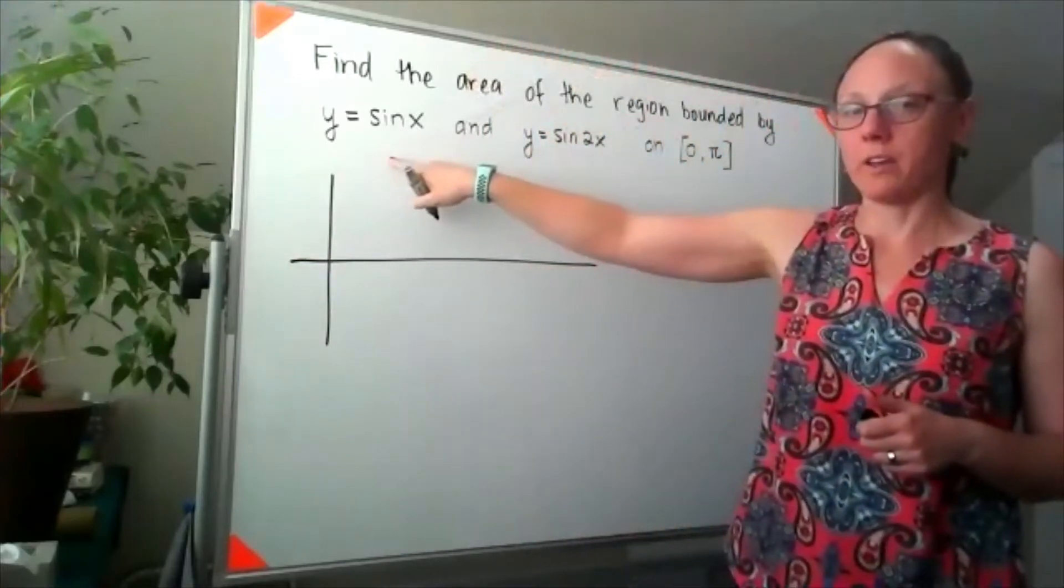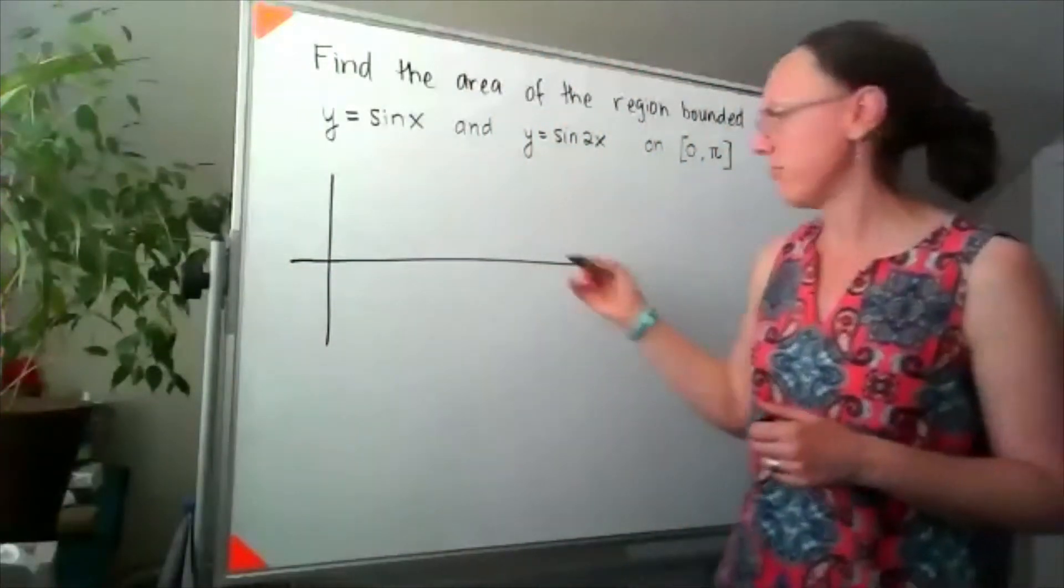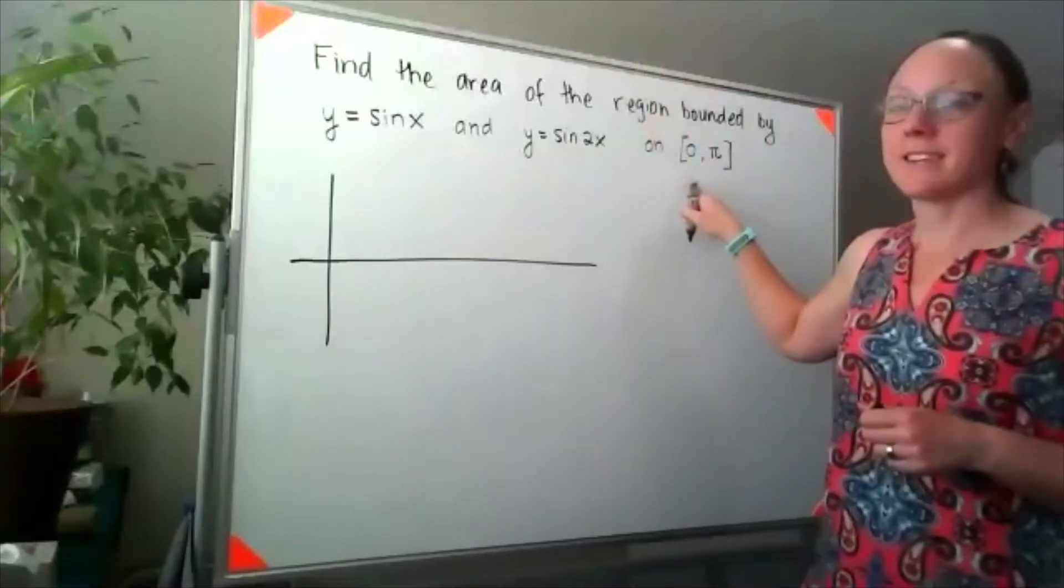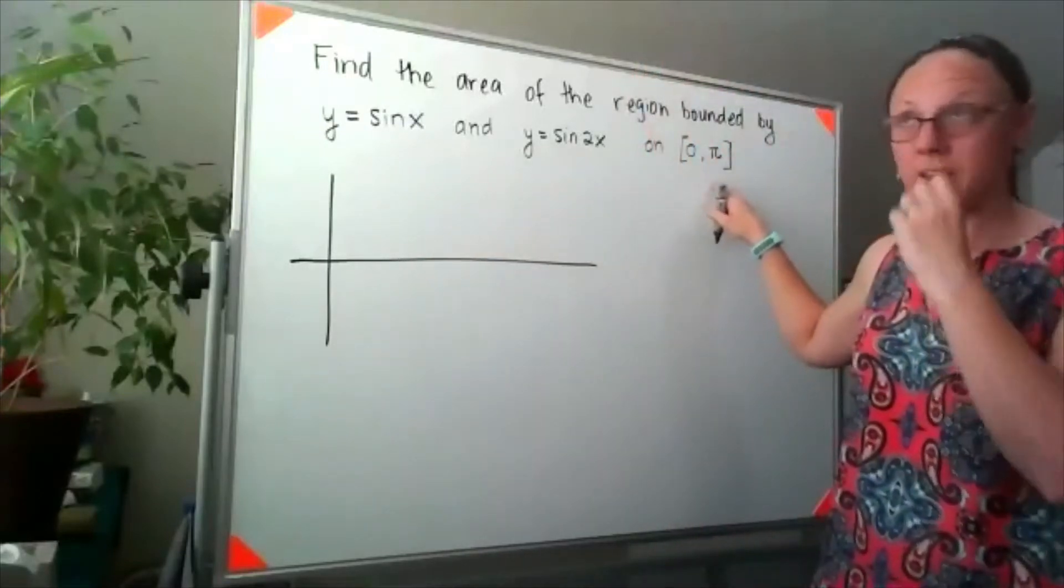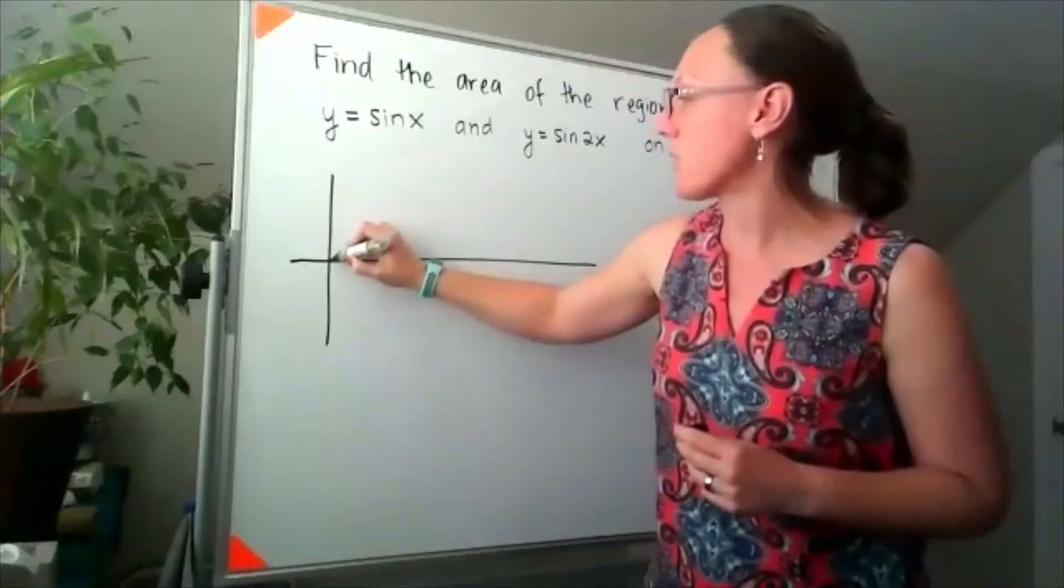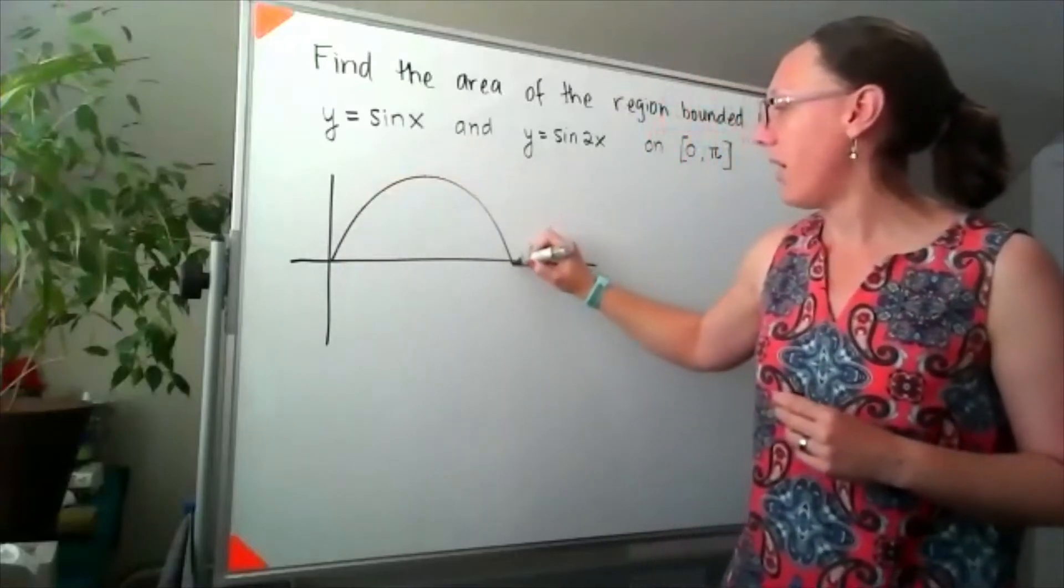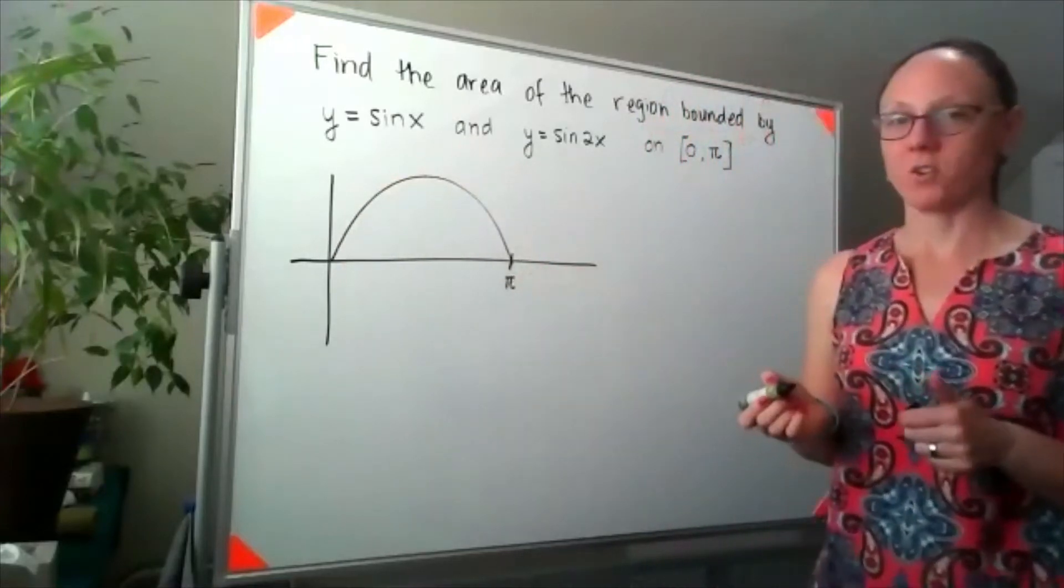I'm going to start by graphing y equals sine of x, and since I'm going from 0 to pi, I know that's really the first hump of our sine of x graph.